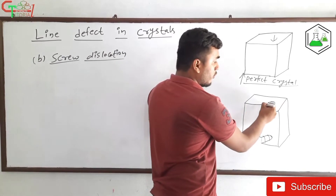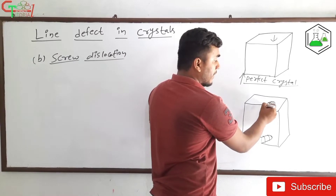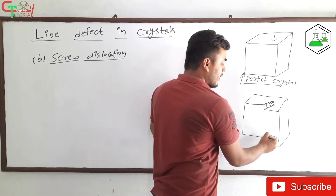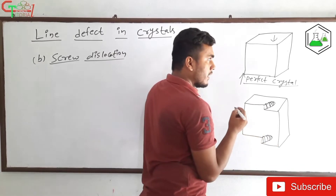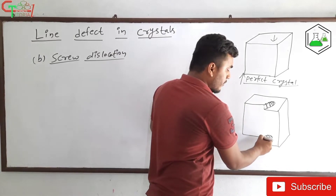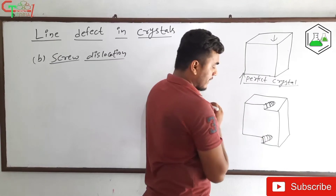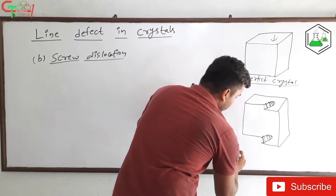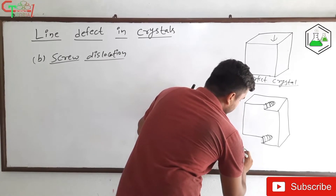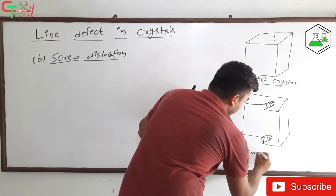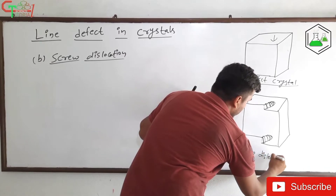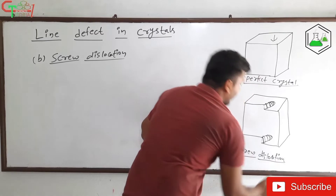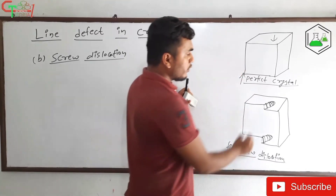The atoms have been moved from their original positions. The atoms should be here in this line, but they move along this line instead. Similarly, on the other side, atoms move from one point to another, thereby creating the defect. This is the figure for screw dislocation, and you can see it looks like a screw — which is why it is called screw dislocation.